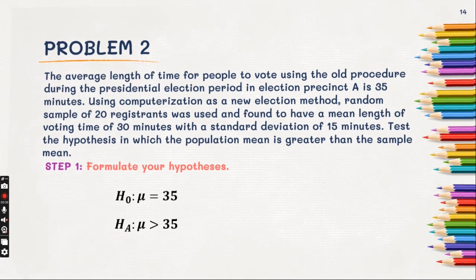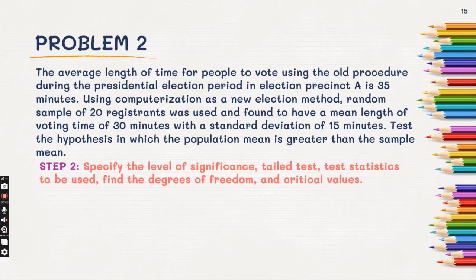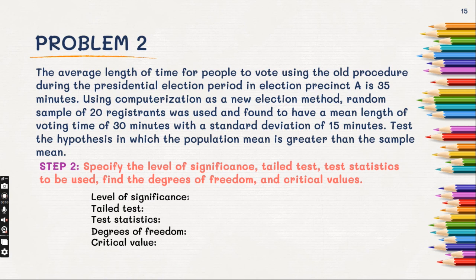Step number two: specify the level of significance up until our critical values. The level of significance — is it stated? It is not stated. As I mentioned with the Z-test, when it is not stated, automatically the level of significance to be used is 0.05.